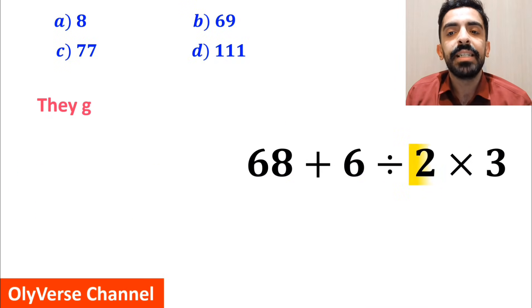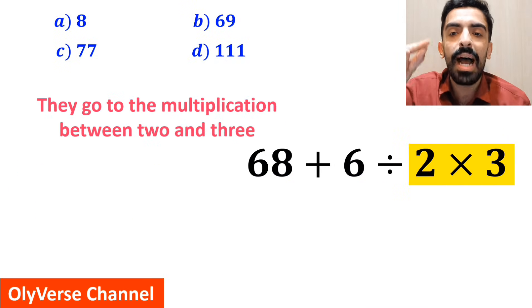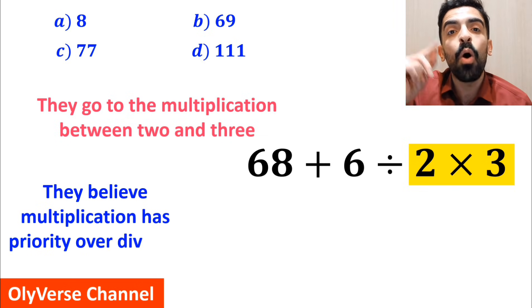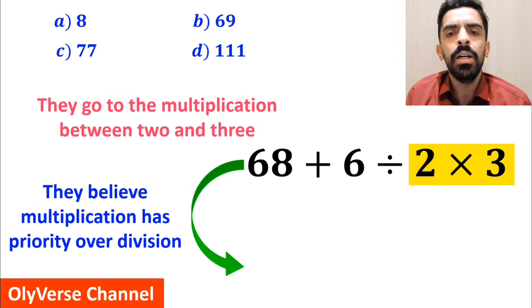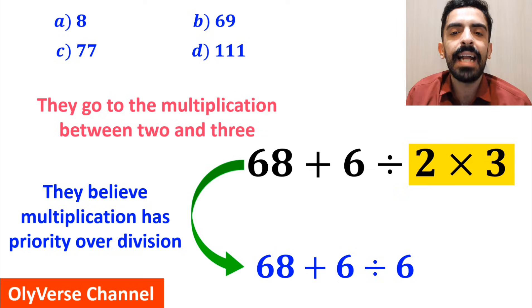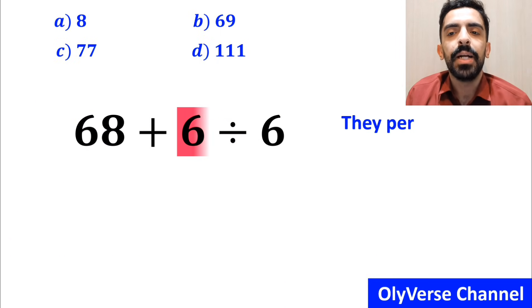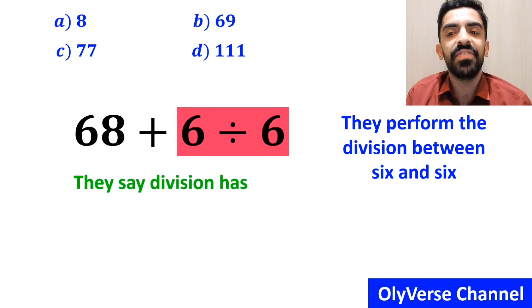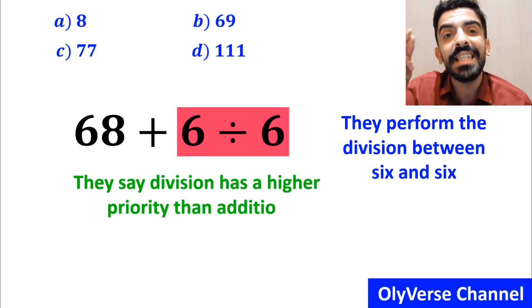In the next step, they go to the multiplication between 2 and 3 because they believe multiplication has priority over division. So they simplify the expression to 68 + 6 ÷ 6. In the final step, they perform the division between 6 and 6 because they say division has higher priority than addition.